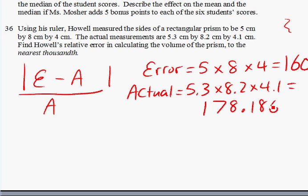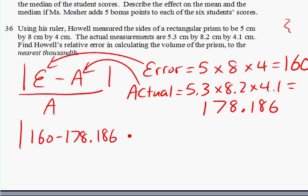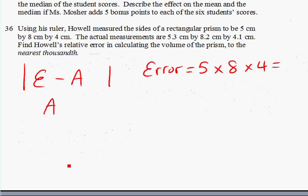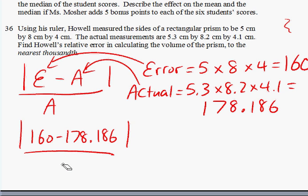Using these two numbers, we can plug into the formula. Error for E, actual for A. Let's plug it in. 160 minus 178.186 over A, which is 178.186.